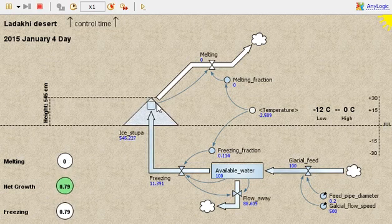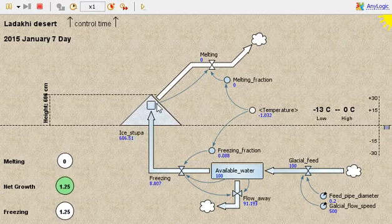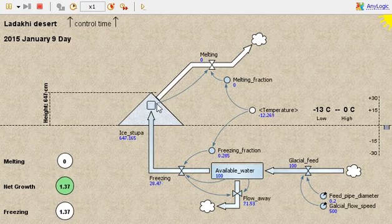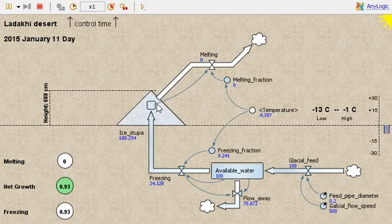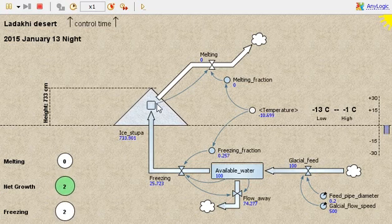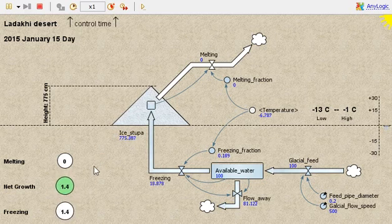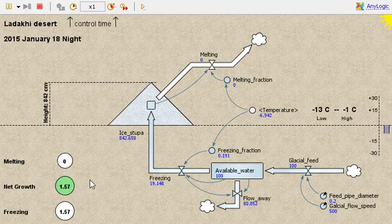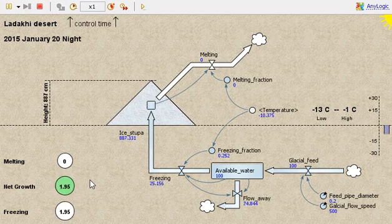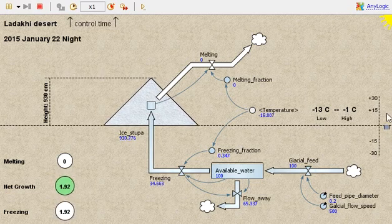The growth of the artificial glacier is dynamic, and as we can see, it heavily depends on the day-night cycle, with most of the growth occurring during nights when it's colder outside. You see the temperature here.